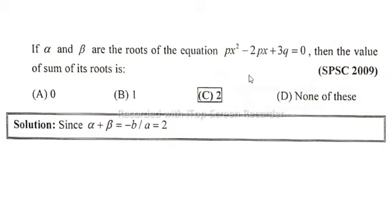So b equals -2p, so minus times minus 2p divided by p, which equals plus 2. Option C is correct, that is 2. If you like my lecture then please